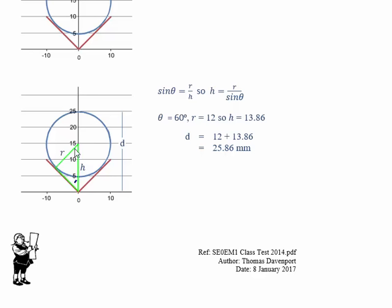We know the radius is 12 and the sine of this angle is going to be r over h. r is 12, theta is 60, so h is going to equal 12 over sine 60 which you can calculate to be 13.86. So the distance d is going to be 13.86 from the bottom of the V to the centre of the ball bearing, and then an additional 12 from the centre of the ball bearing to the top, giving us a total distance of 25.86 millimetres.